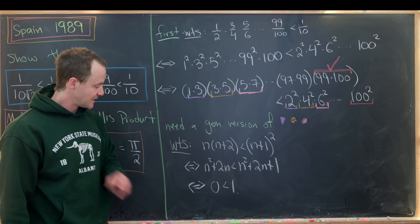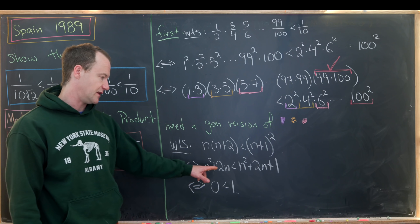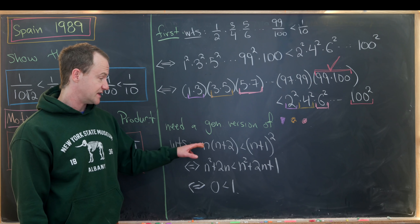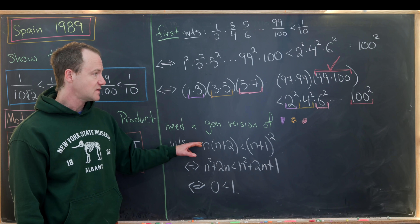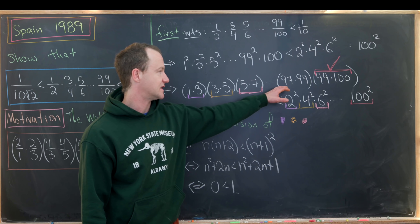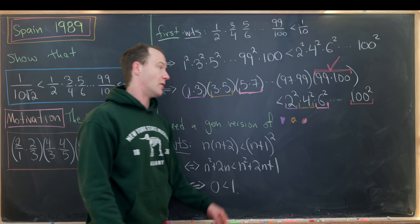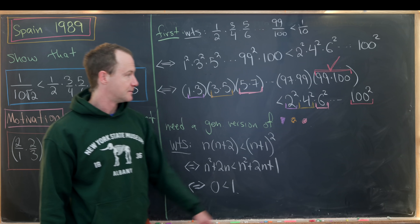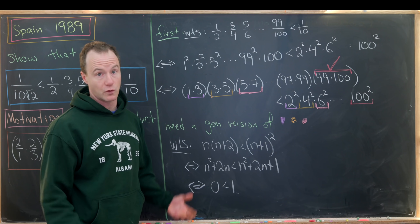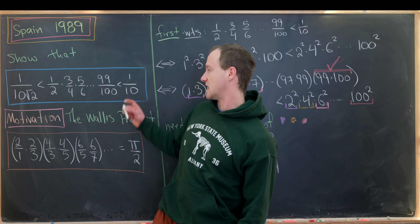We can now read from the top: the inequality 0 less than 1 is equivalent to n squared plus 2n less than n squared plus 2n plus 1, which is equivalent to the factored form n times n plus 2 less than n plus 1 squared. That factored form proves all of the underlined term inequalities, and the last term is clearly the correct inequality as well. This implies the squareds inequality, which implies the right-hand side of our goal. So we're good with the right-hand side.